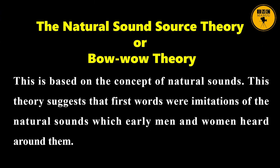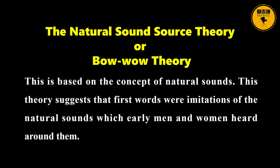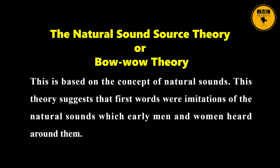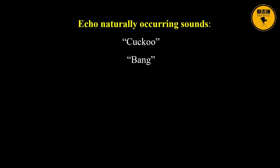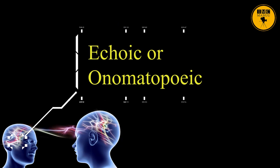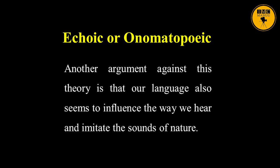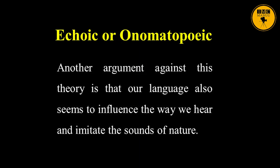The Natural Sound Source Theory, also known as the Bow-wow Theory, is based on the concept of natural sounds. This theory suggests that the first words were imitations of the natural sounds which early men and women heard around them. Naturally occurring sounds that echo include cuckoo, bang, buzz, splash, hiss, rattle, and bow-wow. This is also called echoic or onomatopoeia. One argument against this theory is that our language also seems to influence the way we hear and imitate the sounds of nature.